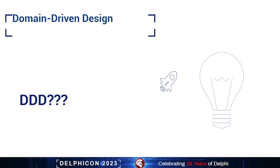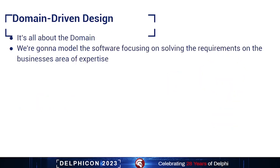Let's break down every word of Domain Driven Design. The first one: the domain. It's all about the domain. The domain is the heart of the software — it's the business area of the software that we are going to model. Driven Design means that we are going to model the software focusing on solving the requirements of the business area of expertise. When you think in DDD, you have to think in Domain — the heart of the software — and Driven Design, which is the modeling of the software to solve those requirements.